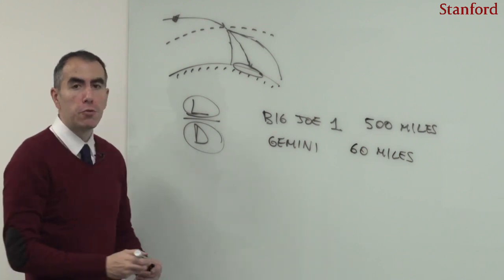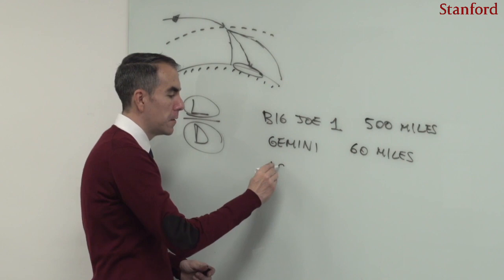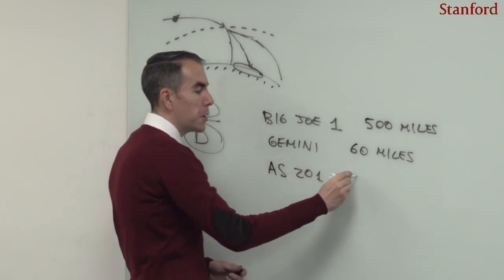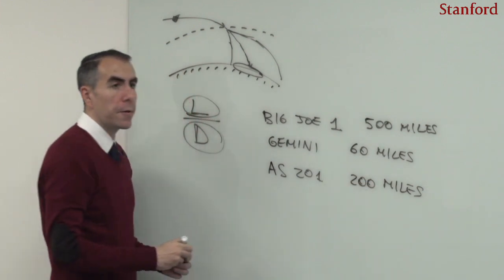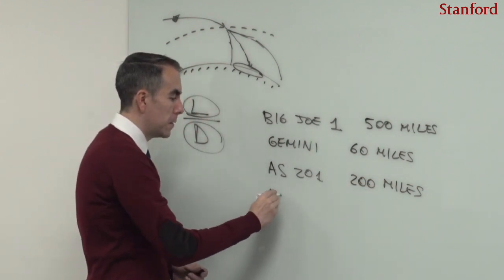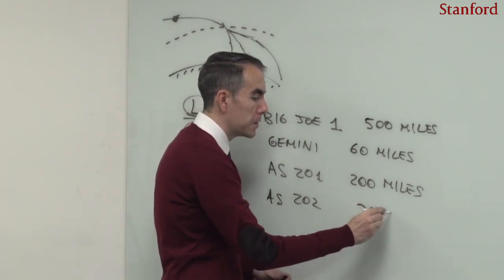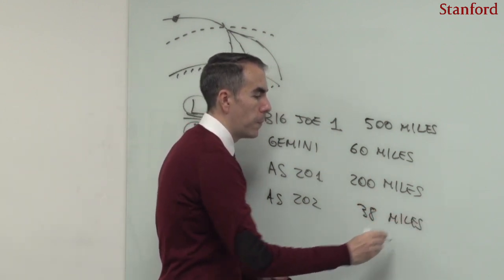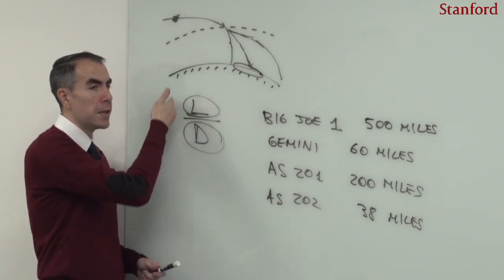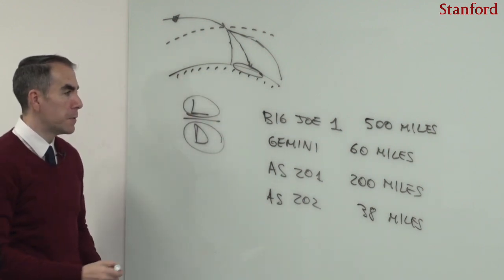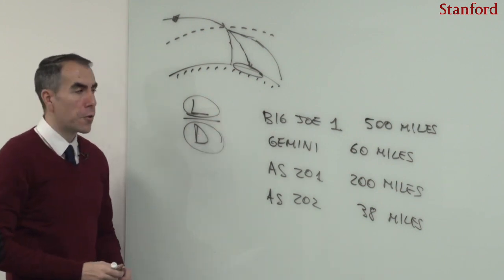It also happened in the first two Apollo missions—the suborbital missions AS-201, which had a 200-mile error, and AS-202, also suborbital, with an error of about 38 miles. This shows that depending on how drag coefficients are predicted, one can have very large errors in the landing zone.